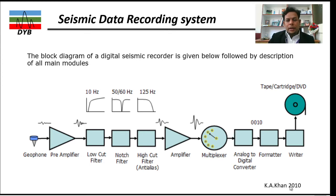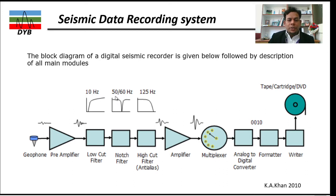Now let's look at the detail of the seismic data recording system. This diagram is taken from Haritamin Khan, 2010. Starting with the geophone — once it records the signal it looks like this waveform. Then we have the preamplifier, which amplifies the amplitude of that signal. After that we have different filters: a low cut filter, a notch filter, and a high cut filter. The low cut filter removes noise below 10 Hz, the notch filter targets 50–60 Hz from power induction lines, and 125 Hz is a higher frequency not needed for our data. After passing through all these filters, the small spikes are removed and we have a refined signal.